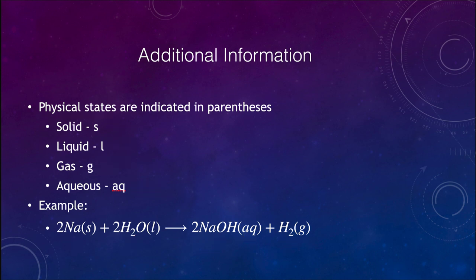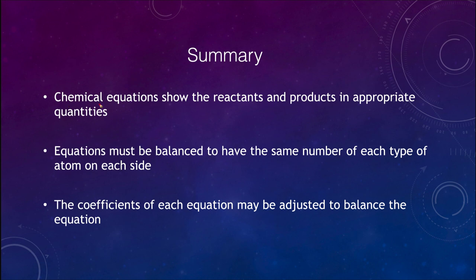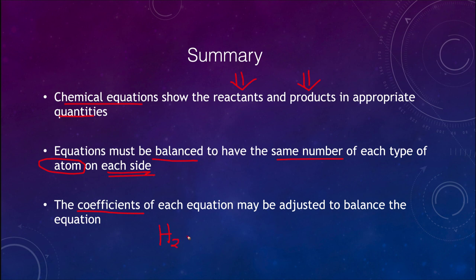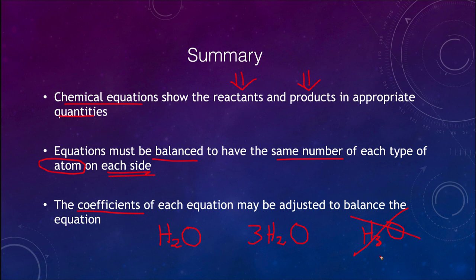Let's finish up with a summary. What we've looked at are chemical equations, which contain reactants and products in appropriate quantities — meaning they have to be balanced, with the same number of each type of atom on each side. To do this, you adjust the coefficients. Remember, you cannot adjust the subscript. In something like water, H2O, you can write 3H2O meaning three water molecules, but you cannot change the subscript to H3O — that completely changes the compound and is no longer water, whereas 3H2O is just three water molecules.